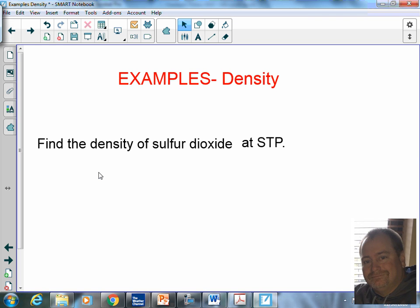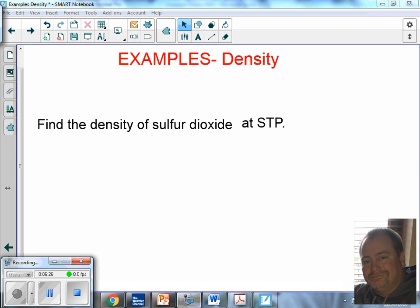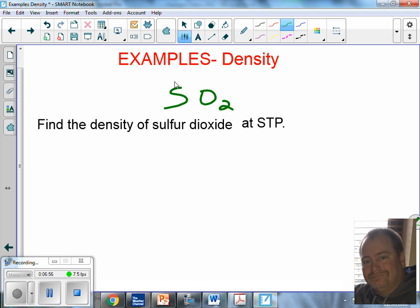Here is our first example of a density problem. So, I'll give you a second to copy it down. So, the first thing I asked you to do was get the molar mass of sulfur dioxide. Somebody give me their value that they calculated for the molar mass of sulfur dioxide. First of all, what's the formula for sulfur dioxide? SO2. Alright. So, density is equal to the molar mass over the molar volume.